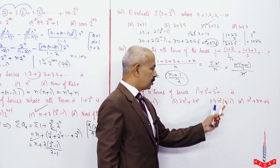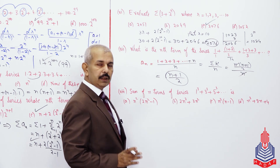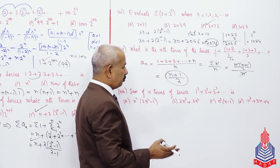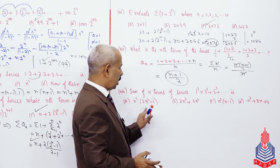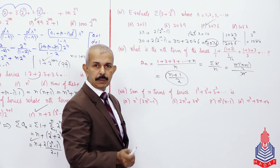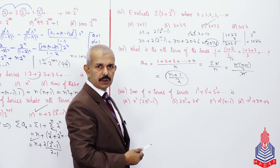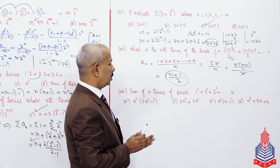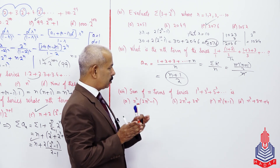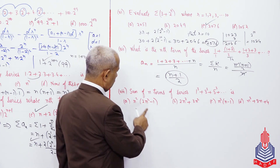This next question is dangerous — if done the normal way it will take two or three pages. But I'll show you an easy method. When a series is given and you have to find the sum with four options provided, use the answer-to-question approach: take each option, substitute values, and check which gives the correct sum.